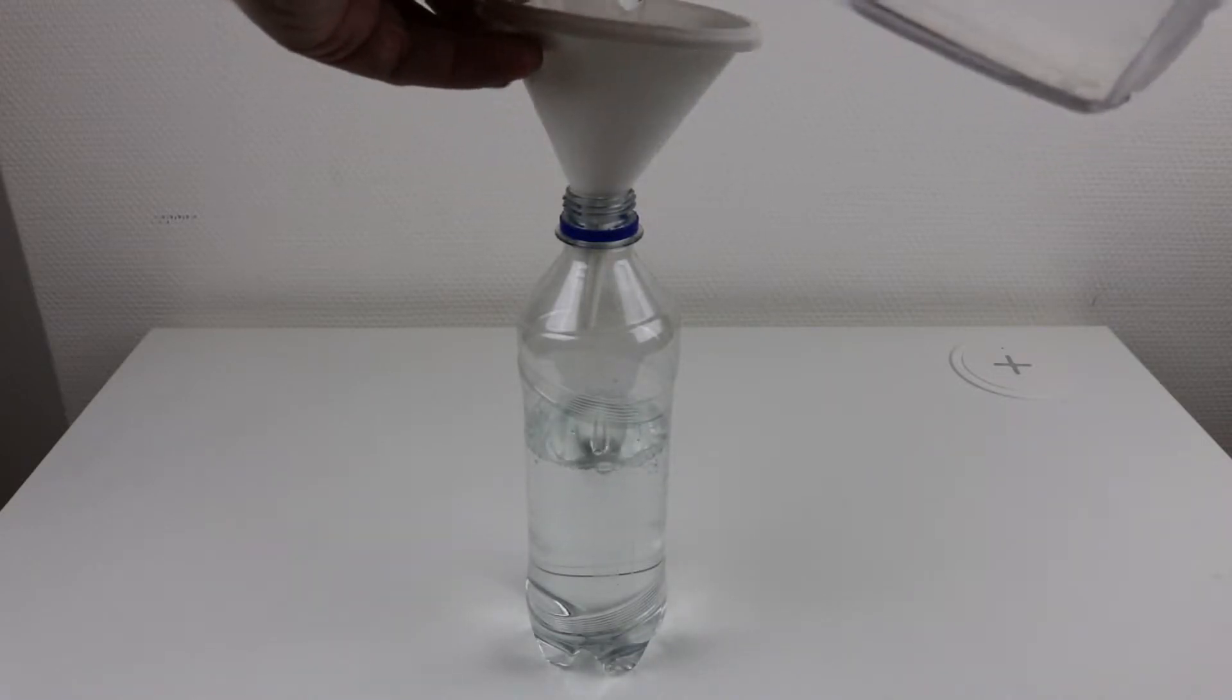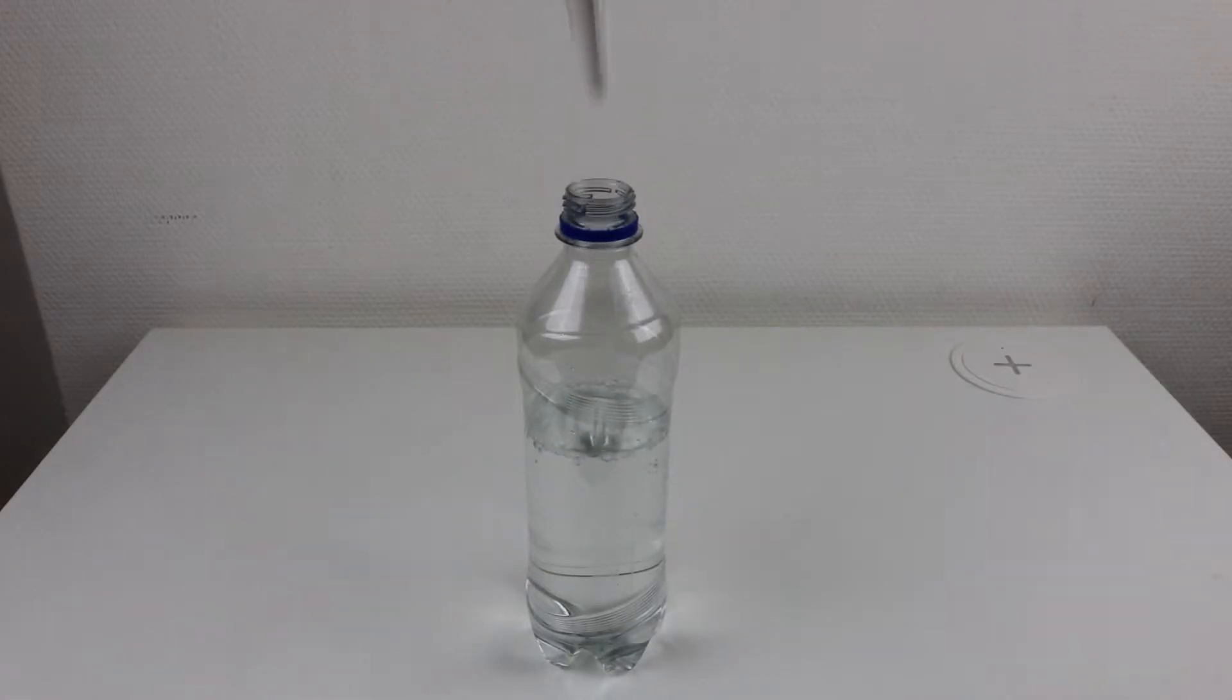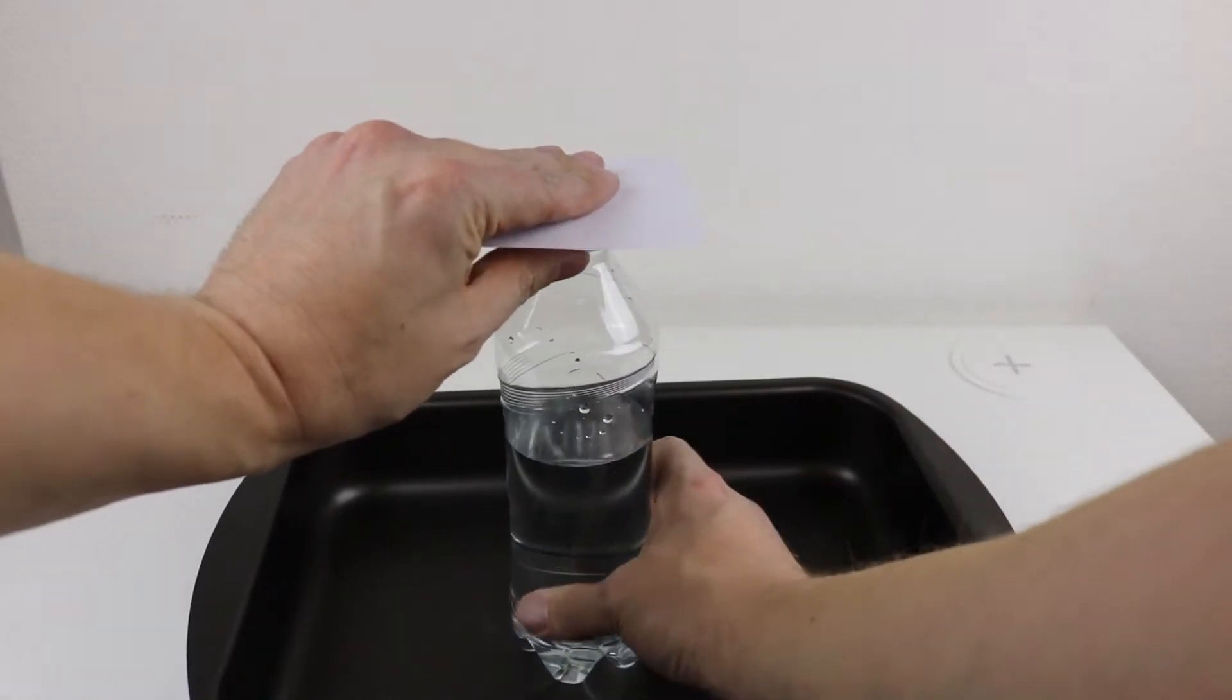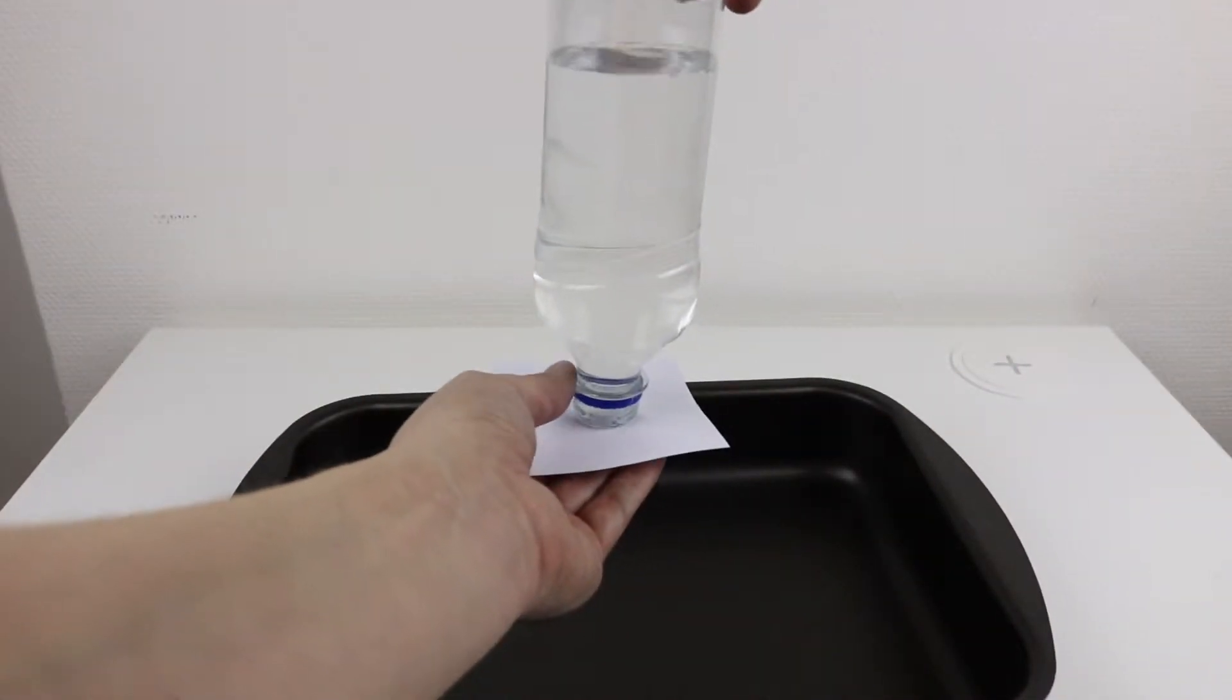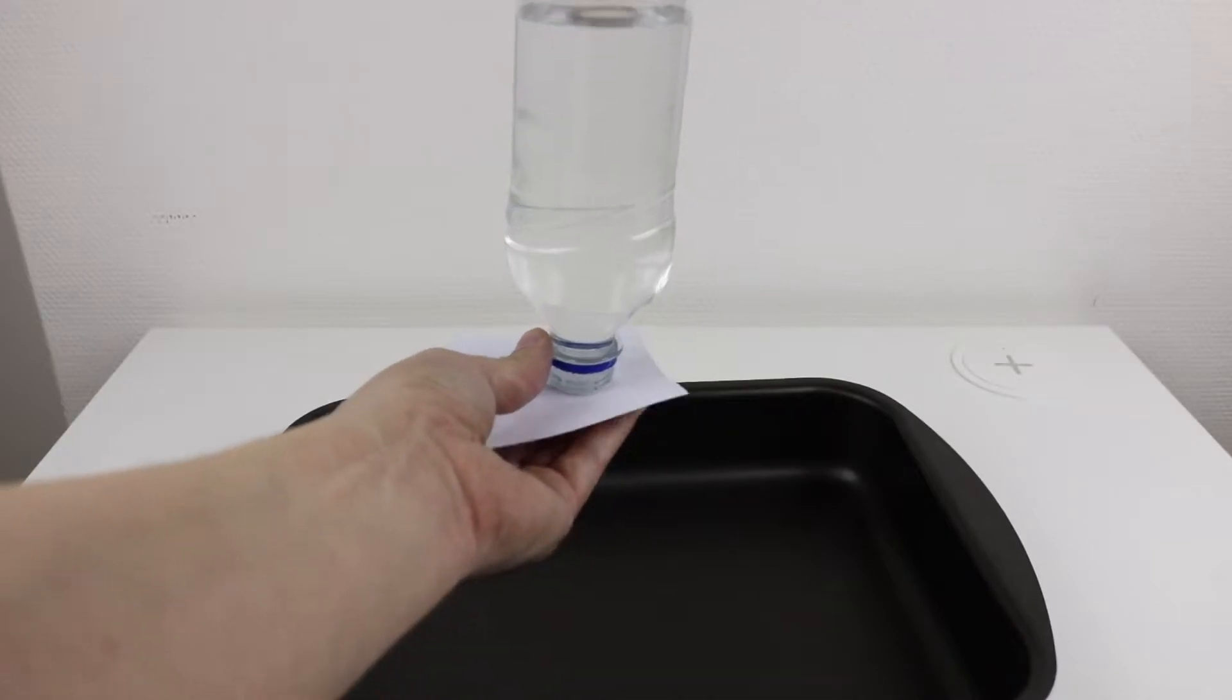So we start by filling a bottle like this. We will put the paper on it and turn it around and slowly slide the paper to the side.